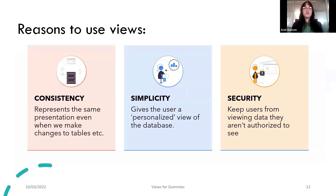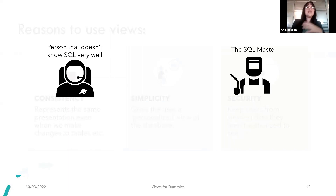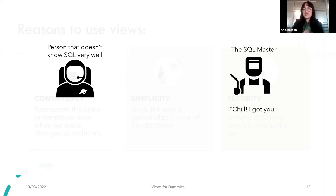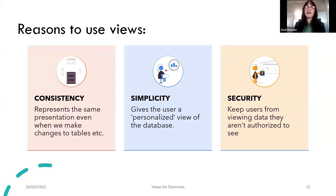Another reason why you'd want to use views is simplicity — it gives the user a personalized view of the database. Let's say someone doesn't know SQL very well and they need data from five tables, where the select query would use complicated conditions, order by clauses, and intricate joins. They would have a problem. To solve this, the database people could just write a view containing all the information they need, and then that person could use a simple select query to view that information — much simpler than worrying about all those joins.